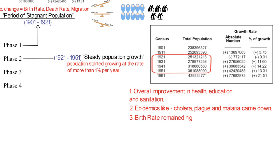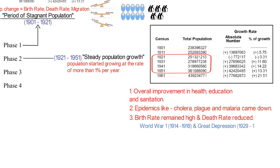As a result, the birth rate remained high, which led to steady population growth. During this phase, World War I had just finished and the Great Depression started in 1929. While most of the important countries in the world were affected, India had some development going on which was quite impressive.